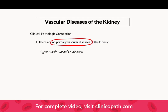Anytime we talk about atherosclerosis of the kidney — which would be renal artery stenosis — there is systemic atherosclerosis. So these patients should also be worked up for coronary artery disease. They should have a good look at their carotid arteries, and you should do a comparison of the blood pressure of the arm to the leg, looking for iliofemoral disease.